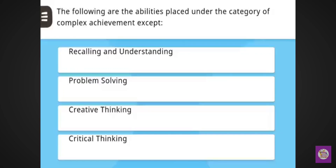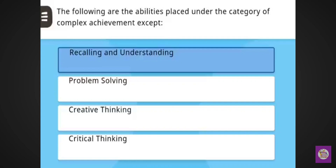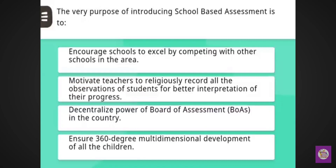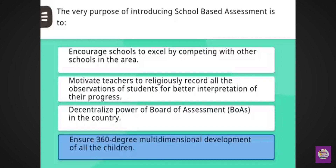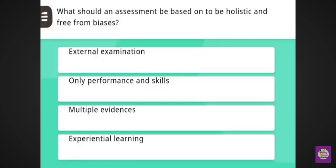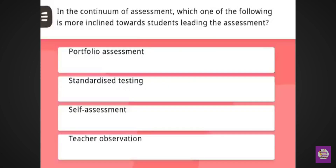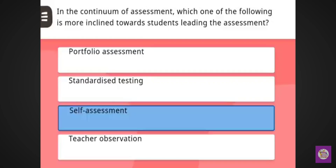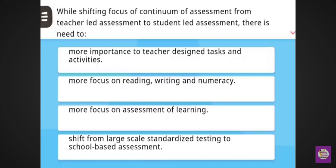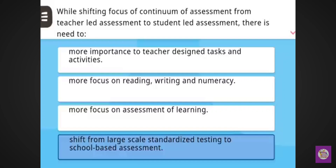Next question: The following are the abilities placed under the category of complex achievement except — correct answer: recalling and understanding. Next question: The very purpose of introducing school-based assessment is to ensure 360-degree multidimensional development of all the children. Next question: What should an assessment be based on to be holistic and free from biases? Correct answer: multiple evidences. Next question: In the continuum of assessment, which one is more inclined towards student leading the assessment? Correct answer: self-assessment. Next question: While shifting focus from teacher-led to student-led assessment, there is need to — correct answer: shift from large-scale standardized testing to school-based assessment.